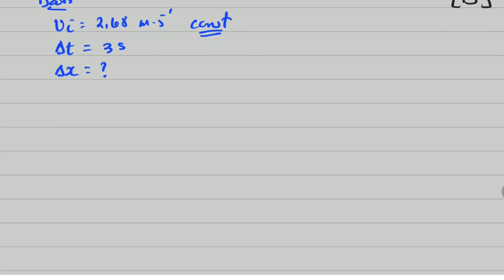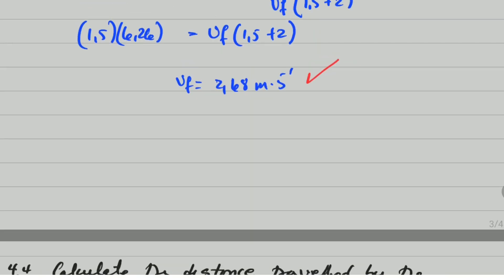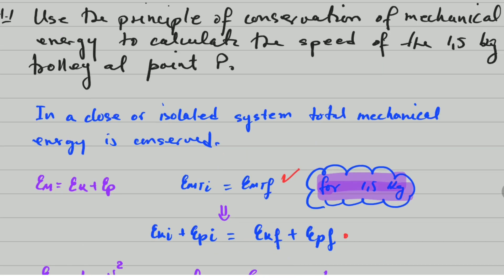Since velocity is constant, displacement equals velocity times time. So displacement equals 2.68 × 3, which gives 8.04 metres. The marks are one for the formula, one for the substitution, and one for the answer — three marks total.